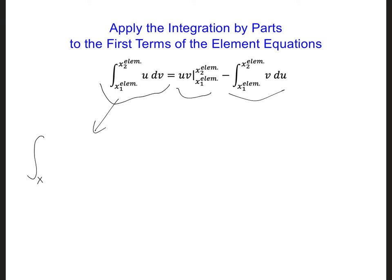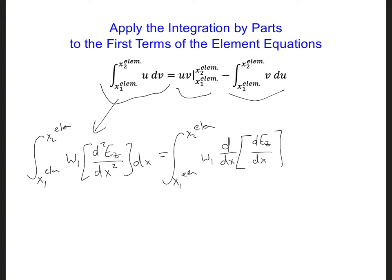We're going to have an integral from x1 element to x2 element. And then we have a coefficient w1, and then we have d, the second spatial derivative with respect to x, dx. If we separate the two spatial derivatives, we get this is equal to x1 element to x2 element. I'm going to put w1 in front, then d/dx and dez/dx, dx.